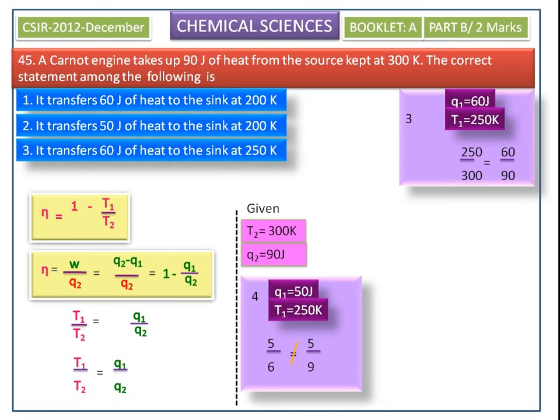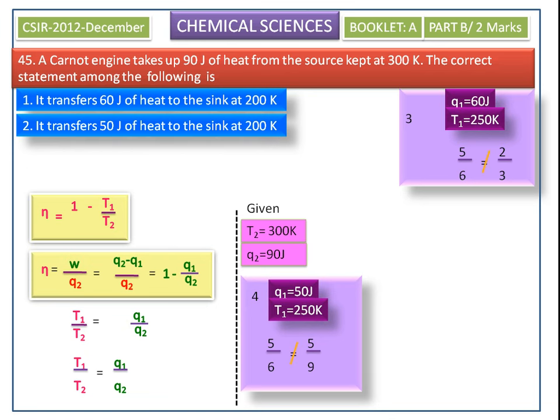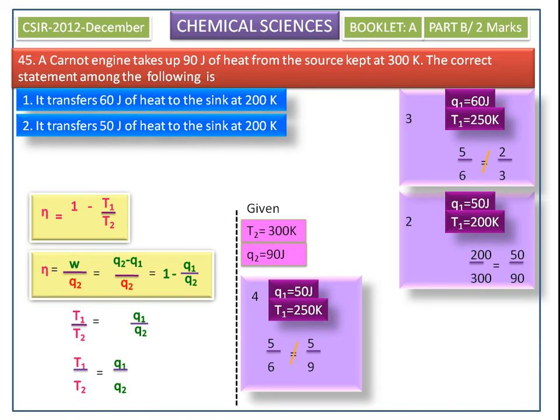Next we consider the third option. Substituting the T1, T2, Q1, Q2 values, we get 5/6 for T1 by T2 and 2/3 for Q1 by Q2. Since T1/T2 is not equal to Q1/Q2, the third option is also not the correct answer.